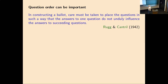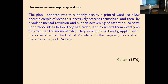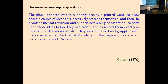People who study polling scientifically recognized long ago that question order can be important in a survey. Rug and Cantrell noted: 'In constructing a ballot, care must be taken to place the questions in such a way that the answers to one question do not unduly influence the answers to succeeding questions.' You can go back even further to Francis Galton in 1879 — a half cousin of Darwin, responsible for early ideas in statistics like correlation — who was doing psychometrics and trying to understand his own thought processes.